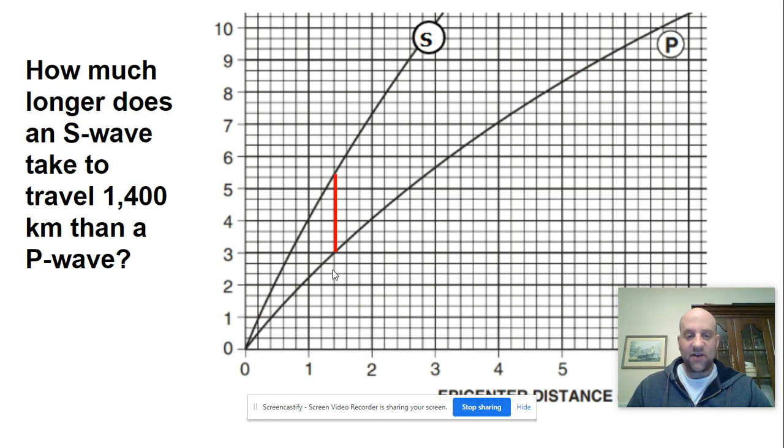One of the easiest ways to solve this problem is to count the time up between—this is our lag time in between the P-wave and the S-wave. So this would be one minute and this would be two minutes, and then we could add another 20 seconds. So that would be a total of two minutes and 20 seconds after the arrival of the first P-wave.